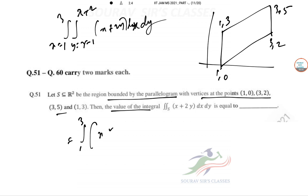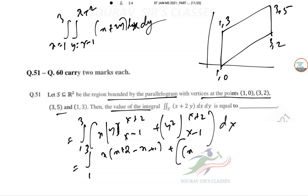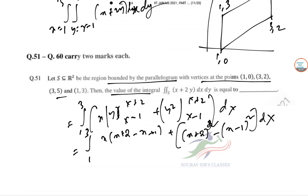Integral from 1 to 3 of [xy evaluated from x-1 to x+2, plus y²/2 evaluated from x-1 to x+2] dx. So this is integral 1 to 3 of [(x)(x+2) - (x)(x-1) + (x+2)²/2 - (x-1)²/2].